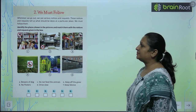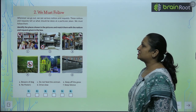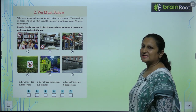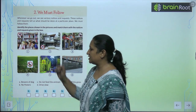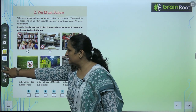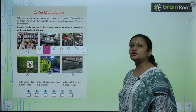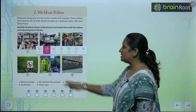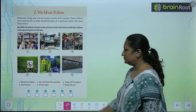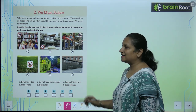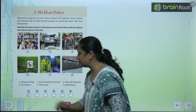Then, identify the places shown in the pictures and match them with the notices and requests given in the box. To see the first picture, children — first picture में हम library में बैठे हैं. So, we should not talk in the library. Library में हमें क्या करना होता है? We have to keep silence. So, आप first के लिए यहां पे F फिल करोगे.